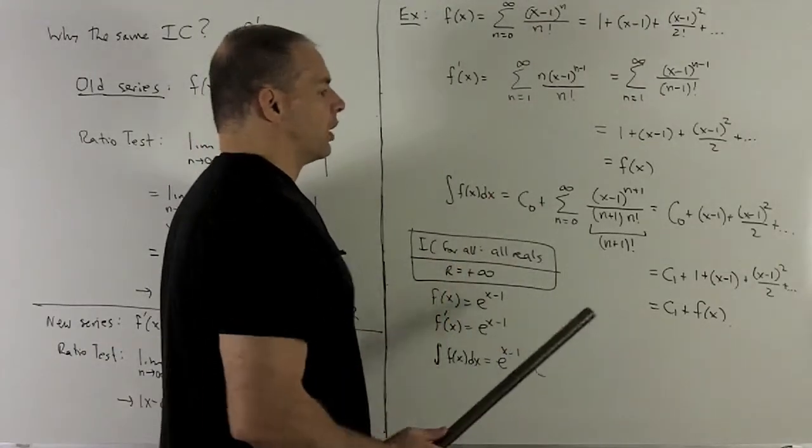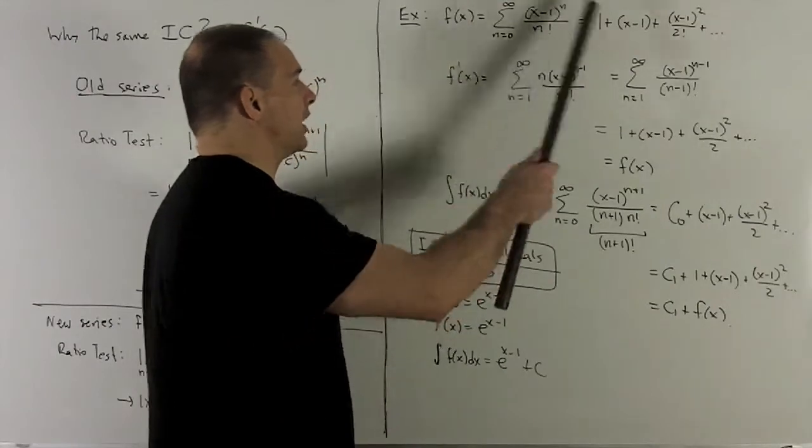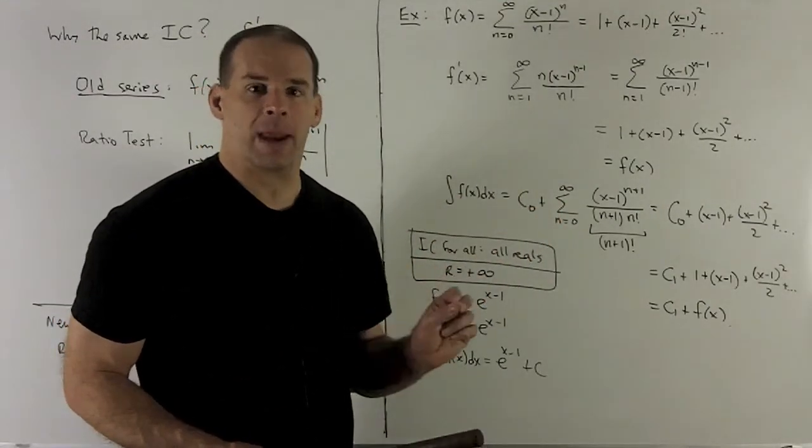So the antiderivative of our function is the function itself. Let's look at some punchlines to all this. The first is going to be, we know in the first case the interval of convergence was going to be all the real numbers.